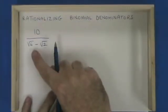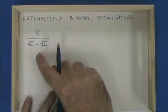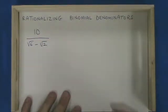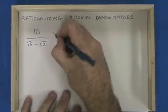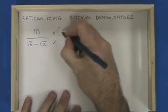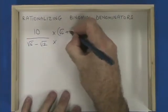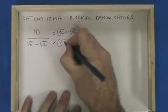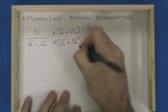What if our binomial has radicals both before and after the symbol? We're going to multiply both top and bottom by root 6 plus root 2. Will it still work?